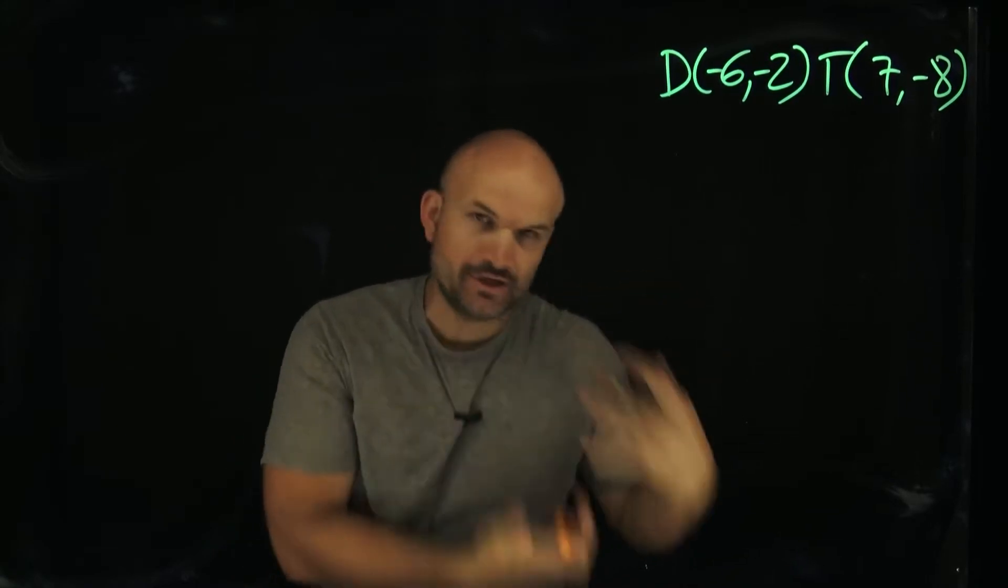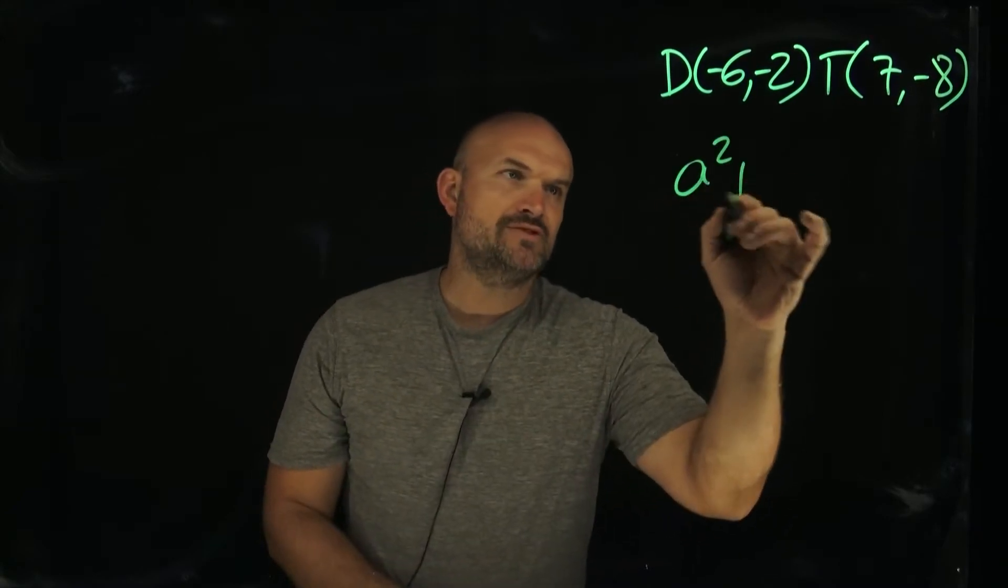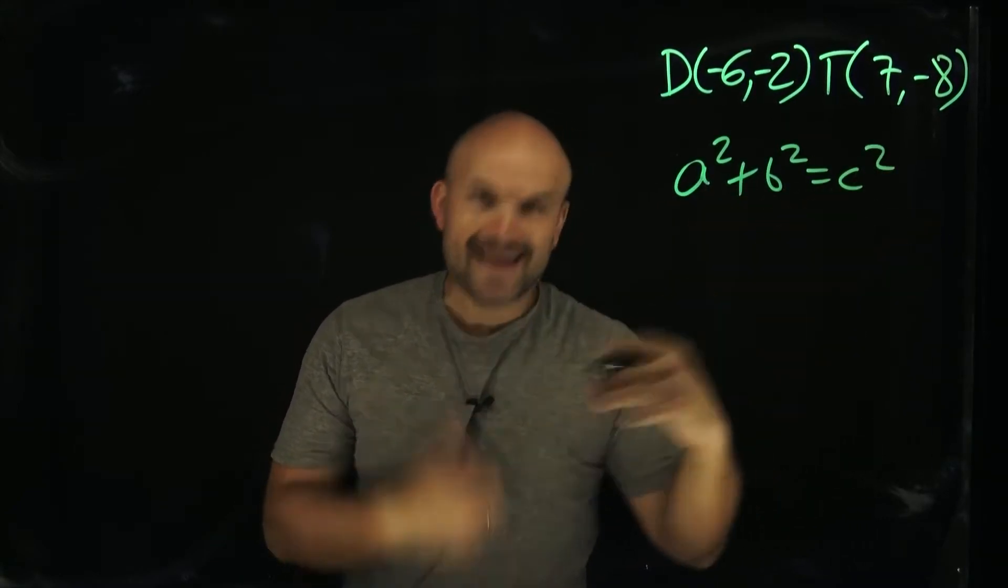Because I think you can probably agree, if you've already been introduced to the distance formula, sometimes it can look a little overwhelming. But if you look at the Pythagorean Theorem, a squared plus b squared equals c squared, that's pretty easy to remember.